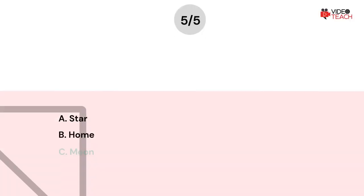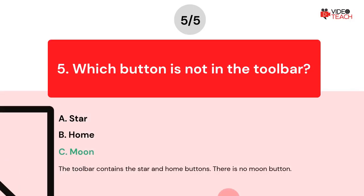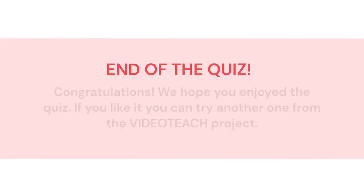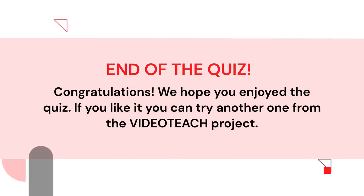The correct answer is Option C. The toolbar contains the Star and Home buttons. There is no Moon button. Congratulations. This is the end of the quiz about Dropbox as a sharing method for the created content.